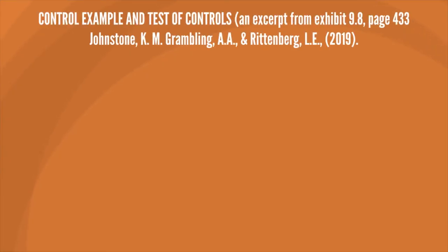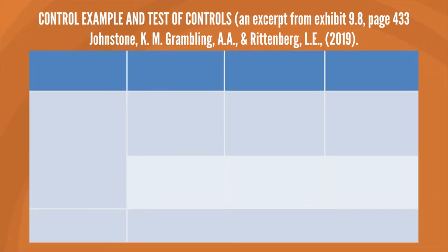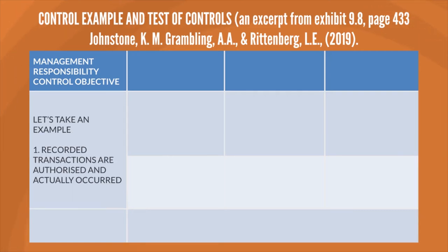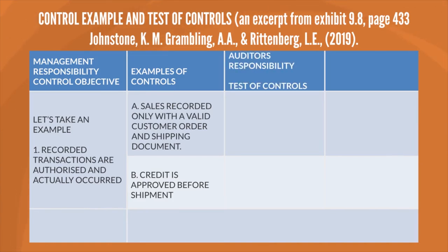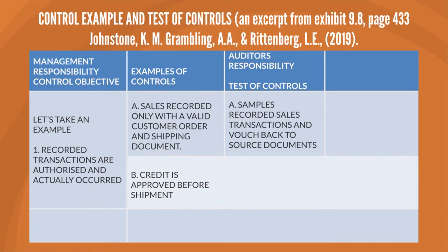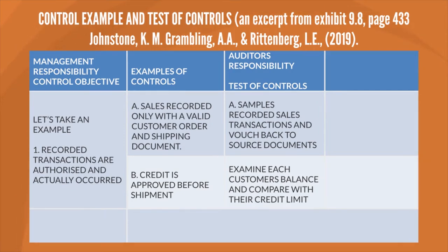Here is an example of controls and test of controls. Remember, it is management's responsibility to actually implement the controls. The control objective is to record transactions — meaning recorded transactions are authorised and actually occurred. The examples of controls are: sales recorded only with a valid customer order and shipping document; and credit is approved before shipment. The auditor's responsibility is to test these controls: first, sample recorded sales transactions and vouch back to source documents; second, examine each customer's balance and compare with their credit limit.